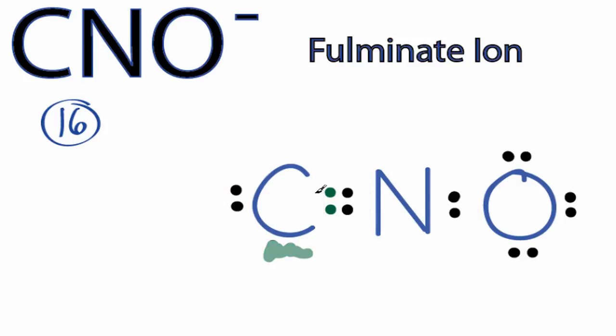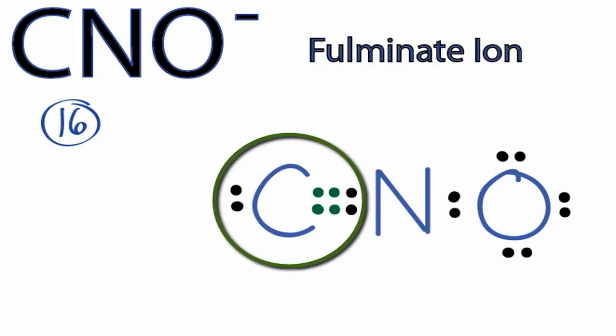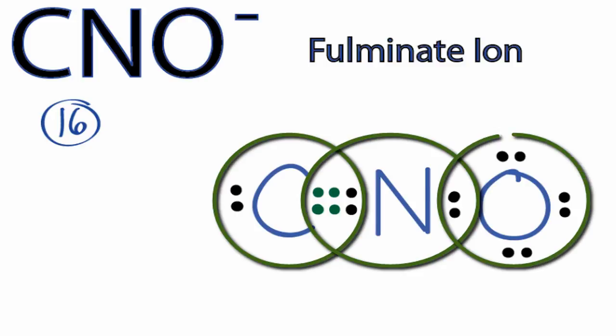Let's take another pair and make it a triple bond. So now the carbon has eight, the nitrogen in the center has eight, the oxygen has eight, and we've used all 16 valence electrons.